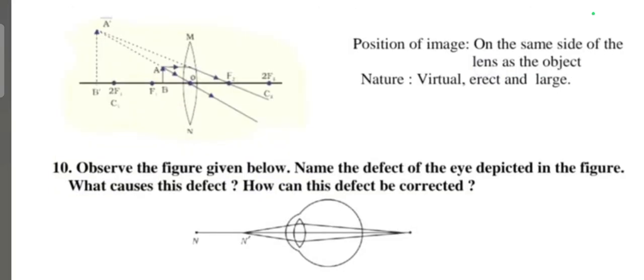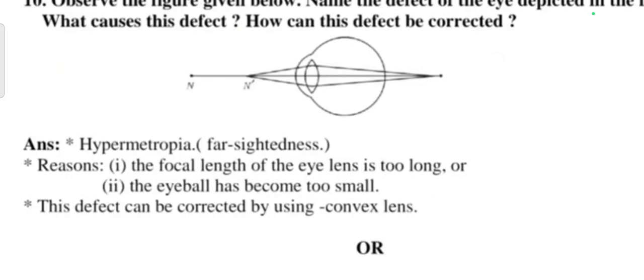Question number ten: observe the given figure, name the defect of the eye depicted in the figure. What causes this defect? How can this defect be corrected? Answer: it is hypermetropia or farsightedness. Reason is the focal length of the eye lens is too short or the eyeball has become too small. This defect can be corrected by using convex lens.